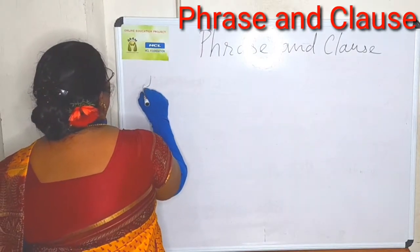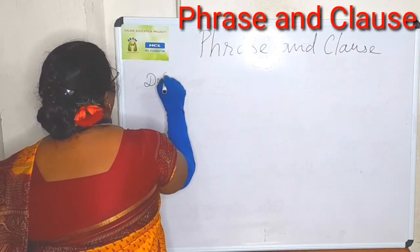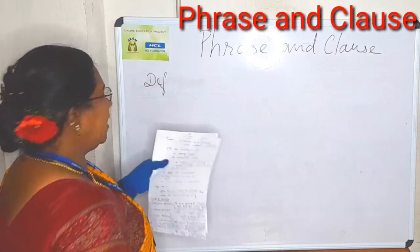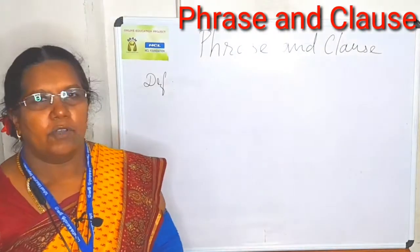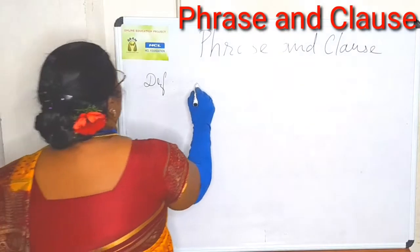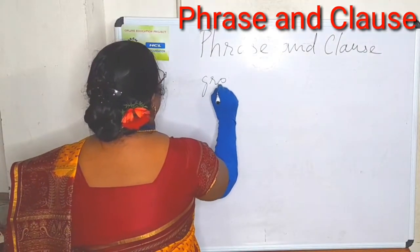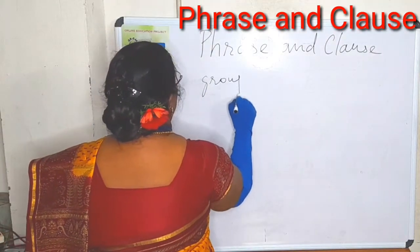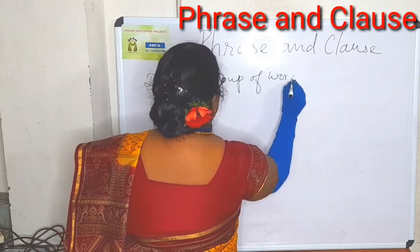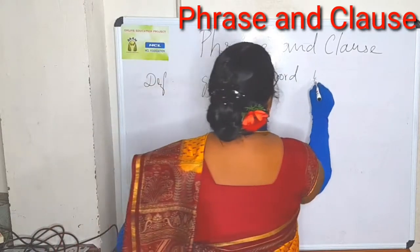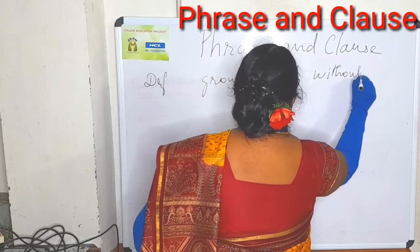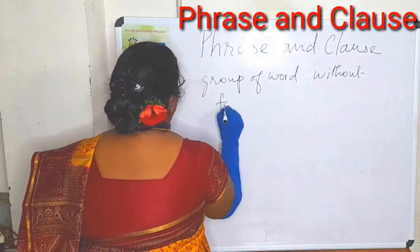First of all, definition. A phrase is a group of words without a finite word — without a finite verb.